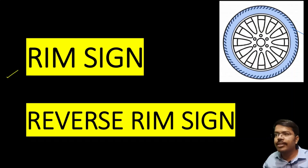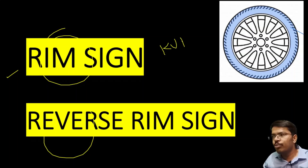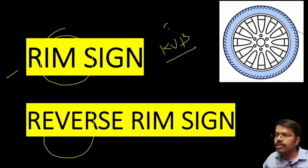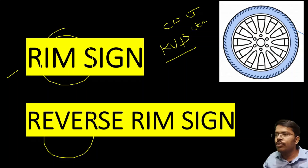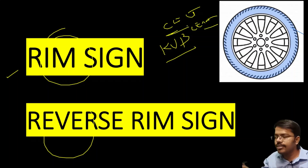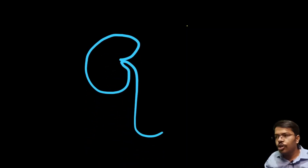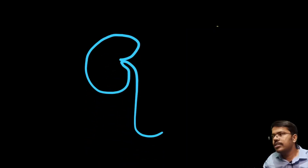In this video we will discuss the rim sign and reverse rim sign in KUB imaging and contrast imaging, basically CECT or CE-MRI. Most commonly it is described with contrast-enhanced CT cases. If we take a normal kidney, whenever we do contrast imaging...